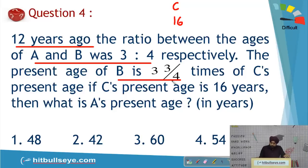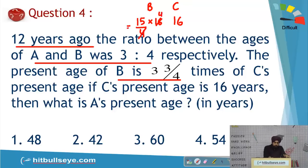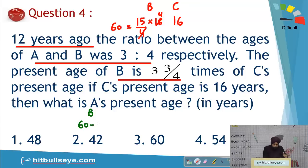Since 3/4 gives us 15/4 when adjusted, B is 15/4 times C. So B = 16 × (15/4) = 60 years. Since the ratio was 12 years ago, B's age 12 years ago was 60 − 12 = 48 years.